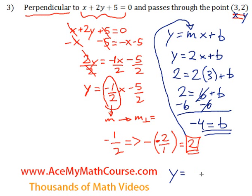So the equation of our line is y equals 2x. The 2 came from the slope, of course. Plus b, which is negative 4.